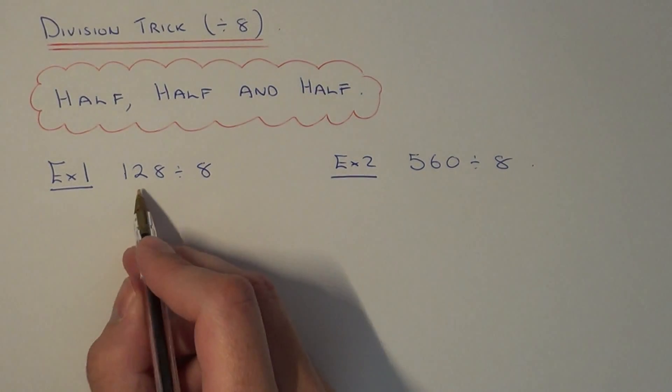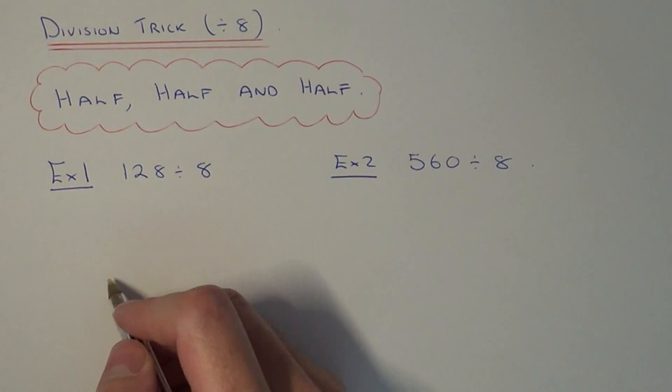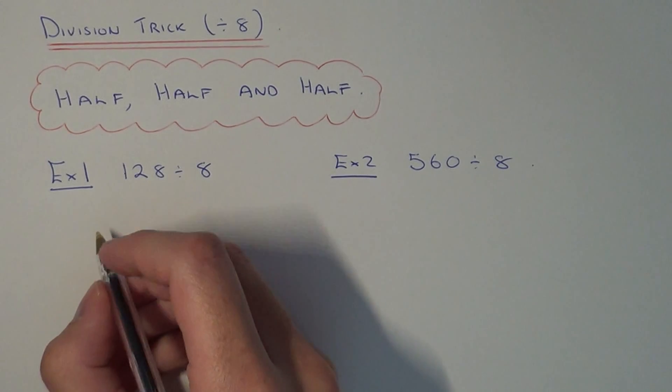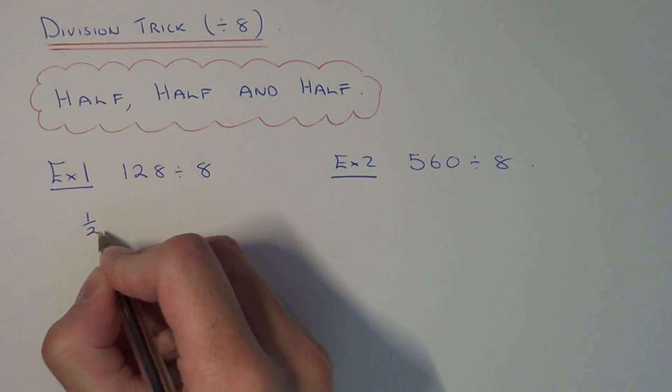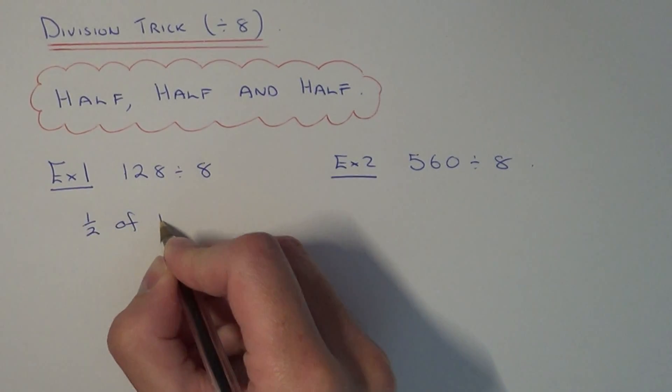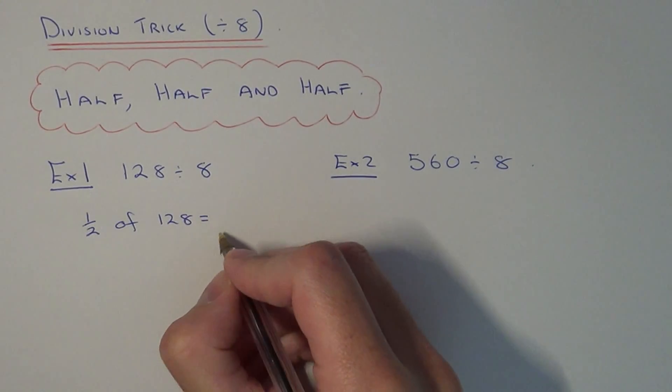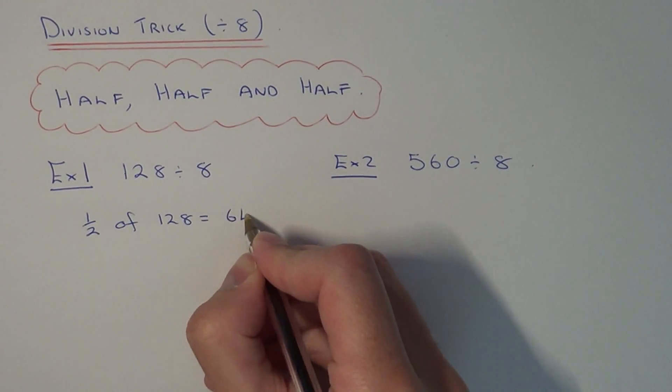Let's have a look at example 1. We need to work out 128 divided by 8. First of all, we need to work out half of 128. Half of 128 is 64.